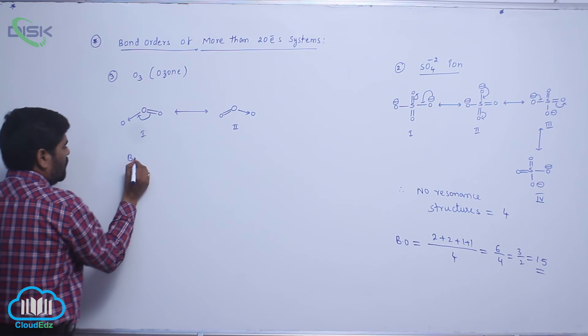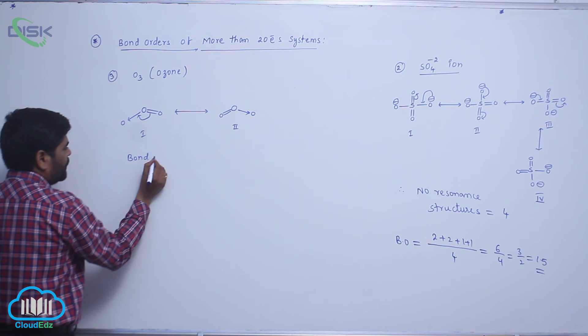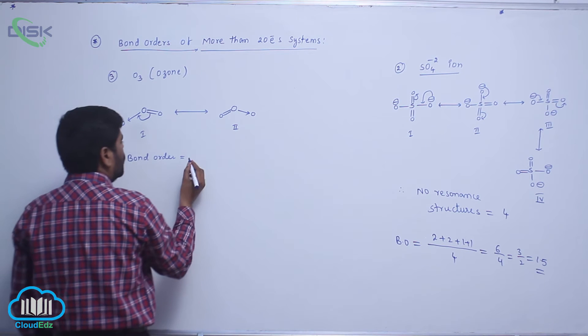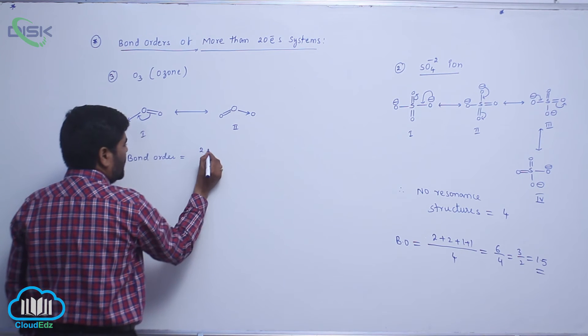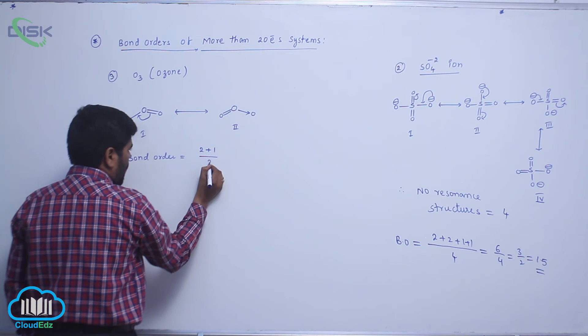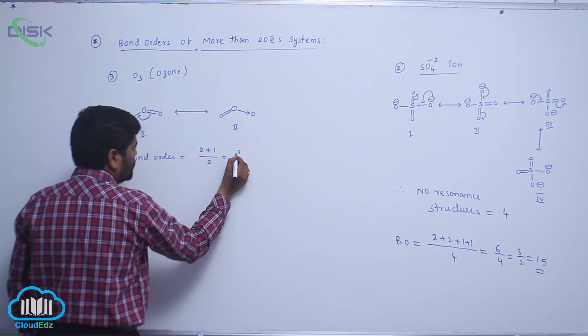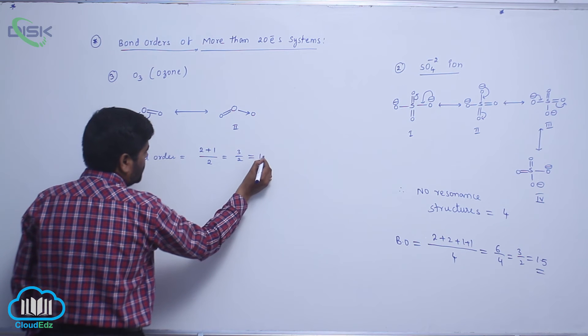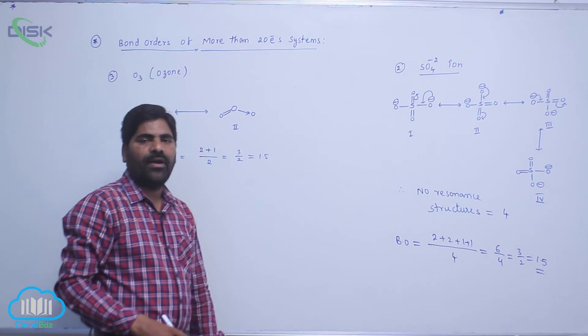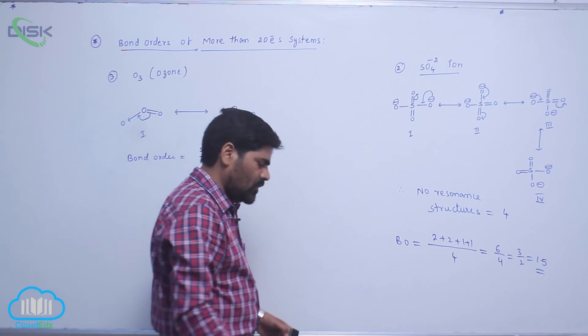Therefore, bond order equals the number of bonds around the central atom (2 plus 1) divided by the number of resonance structures (2). So 3 by 2, which is 1.5 bond order.